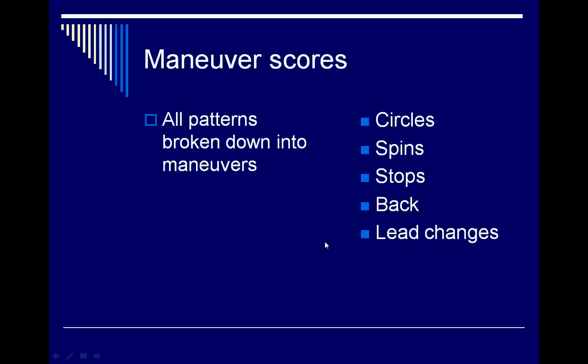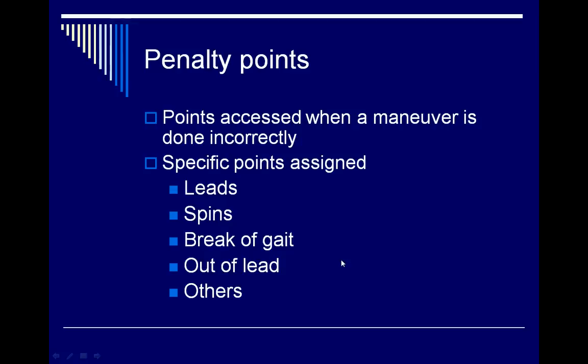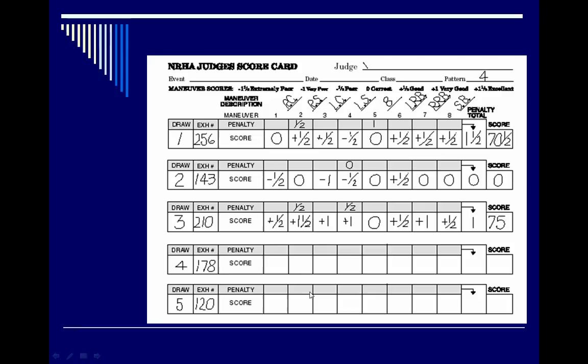Patterns are broken down into various maneuvers consisting of different combinations of circles, spins, stops, backs, and lead changes — grouped across the six or eight maneuvers within a reining pattern. Penalty points are assessed only when a maneuver is done incorrectly, with points assigned specifically to things done incorrectly with the leads, spins, and there's a penalty for break of gait if they're out of lead.